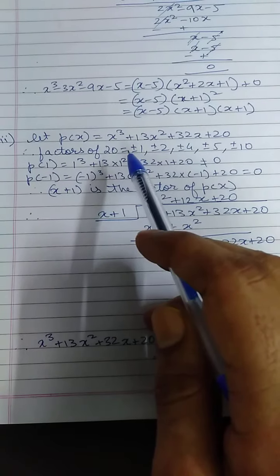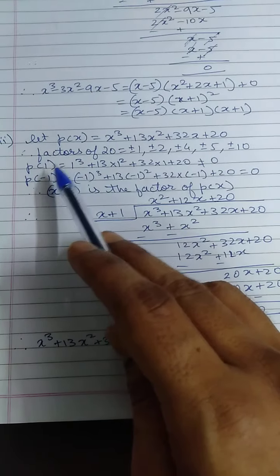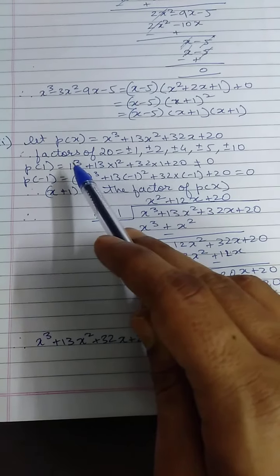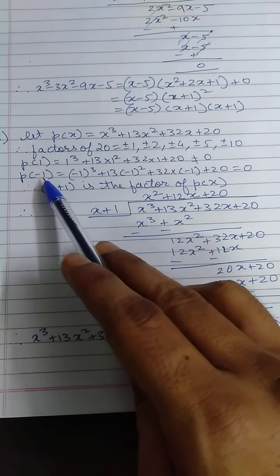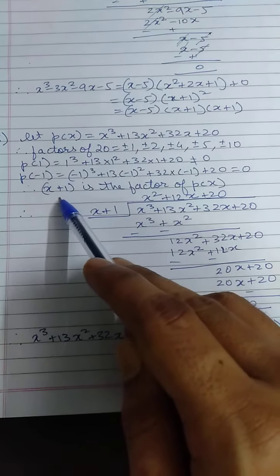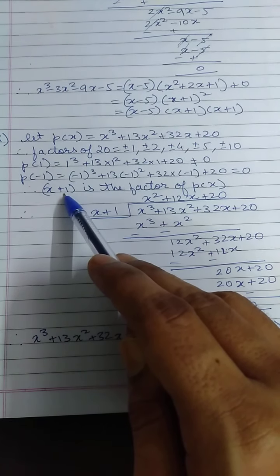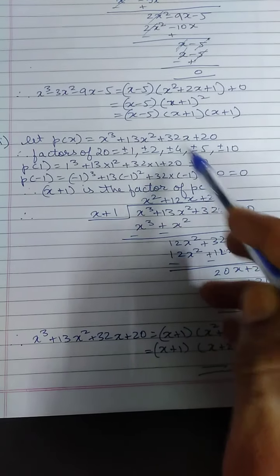Now from this trial and error method, I should have one zero. If I substitute 1, the remainder is not 0, so this is not a factor. When I substitute minus 1, minus 1 gives me 0. So if substituting minus 1 gives me 0, x plus 1 would be the factor. Whatever is the sign here, that opposite sign we have to take for the factor. So x plus 1 is the factor of my polynomial p of x.